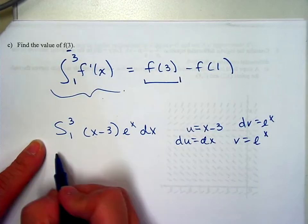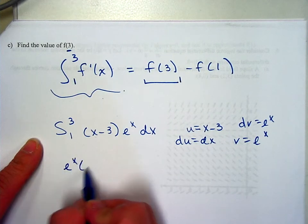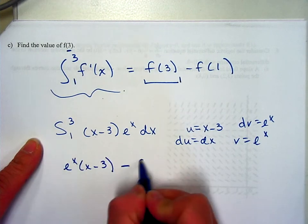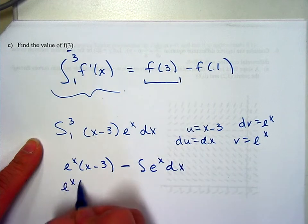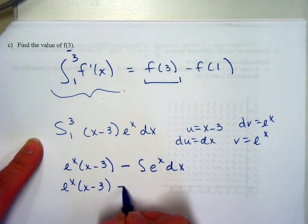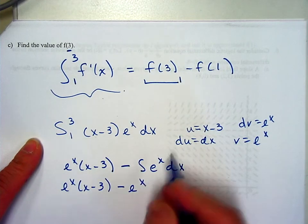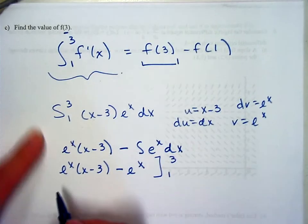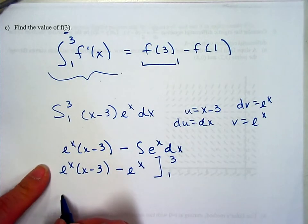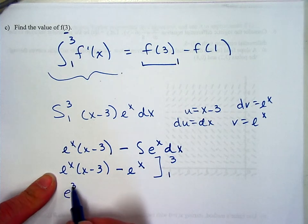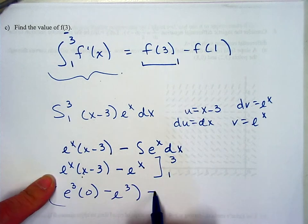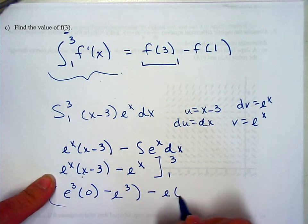So uv minus the integral of v du. And I can integrate this pretty easily, just e to the x. And my bounds go from 1 to 3. So if I plug that in, I'm going to get, let's see,